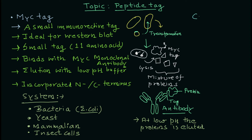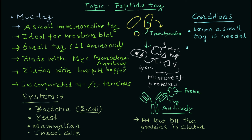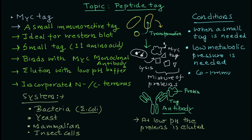The conditions where you use the myc tag: first, when you want a small tag in your protein so you don't want to stress the system. Second, when low metabolic pressure is needed — you don't want your bacterial, yeast, or mammalian system working too hard. Third, for co-immunoprecipitation studies.